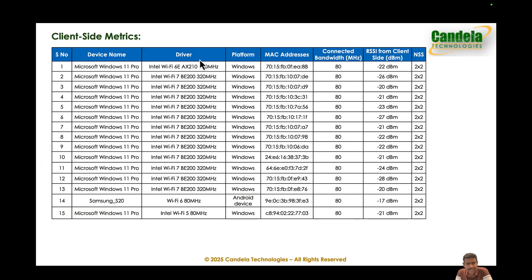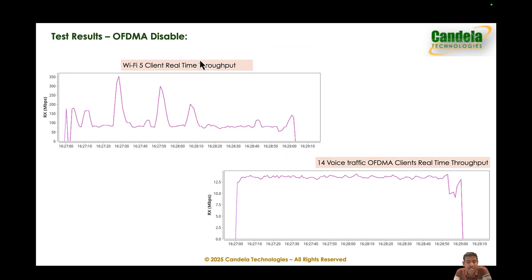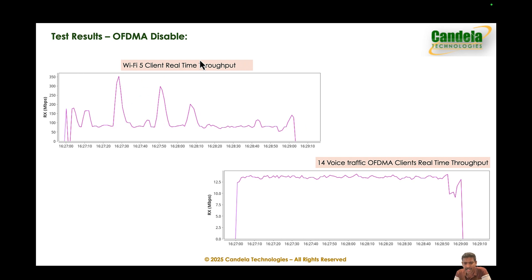Here are the results with OFDMA disabled on the AP. We did have a knob on the ASUS AP to enable or disable OFDMA. The throughput seen by the Wi-Fi 5 client averaged around 110 Mbps, with some spikes going up to 350 Mbps maximum, but it was not able to sustain those peaks — it was not very stable. The 14 OFDMA clients together show about 14 Mbps as expected. This throughput for the Wi-Fi 5 client is a measure of the unused air time.